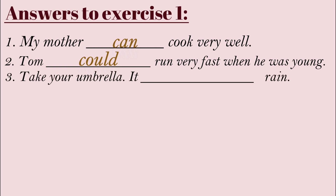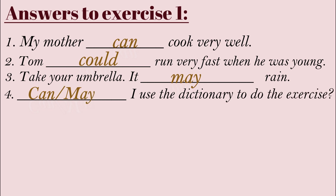Number three: 'Take your umbrella, it may rain' — here it is more probable that it will rain. 'Might' can also be used if the rain is considered less probable. Number four: 'Can I use the dictionary to do the exercise?' or 'May I use the dictionary to do the exercise?' — both are asking for permission.